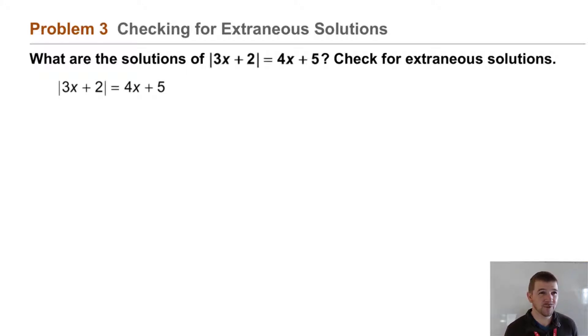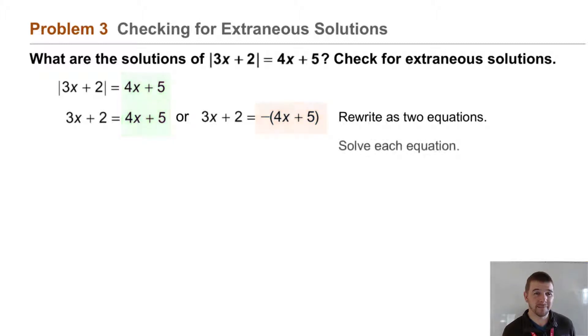Well, we'll solve this as before. We'll rewrite two equations, one equal to the positive version of 4x plus 5 and one equal to the negative of that, which will be negative 4x minus 5. Don't forget to distribute the negative to both terms. We'll solve these independently and we find the solutions x equals negative 3 and x equals negative 1.